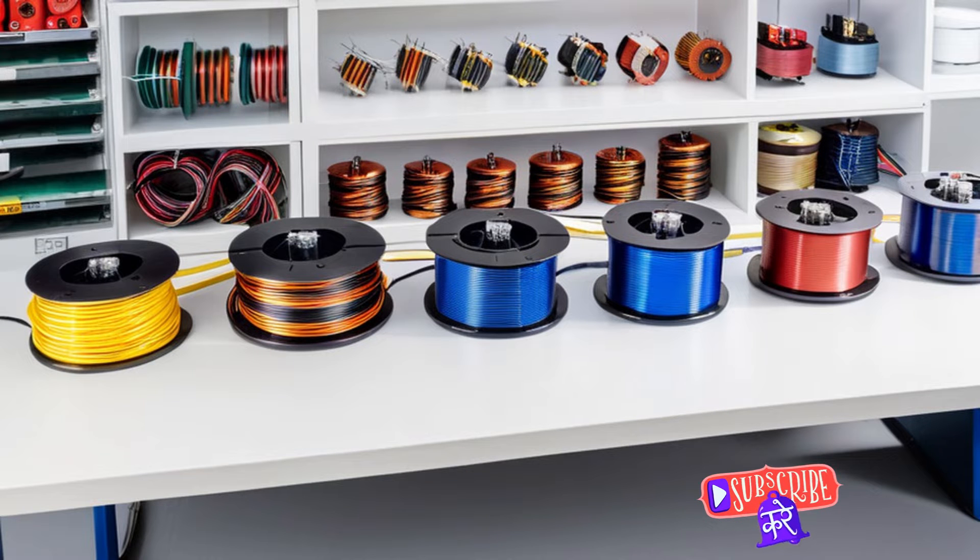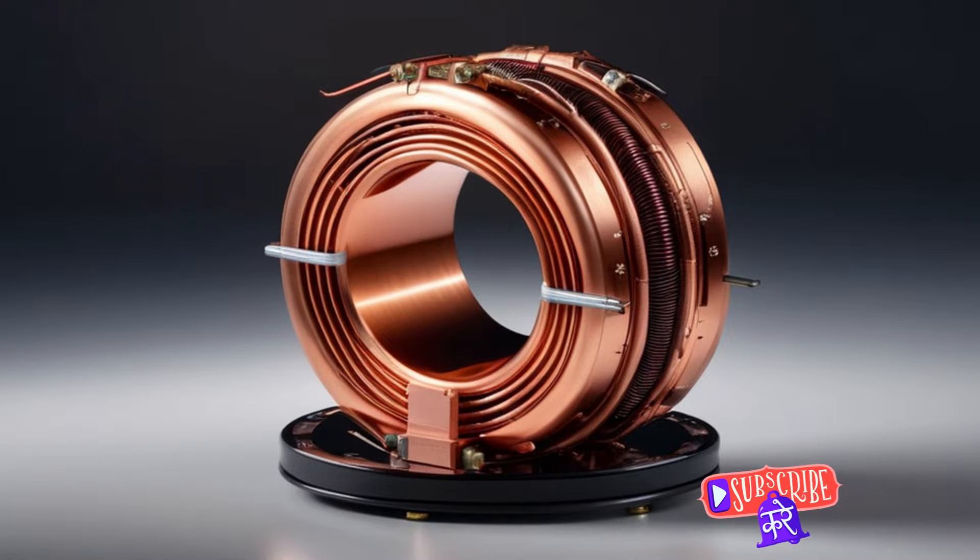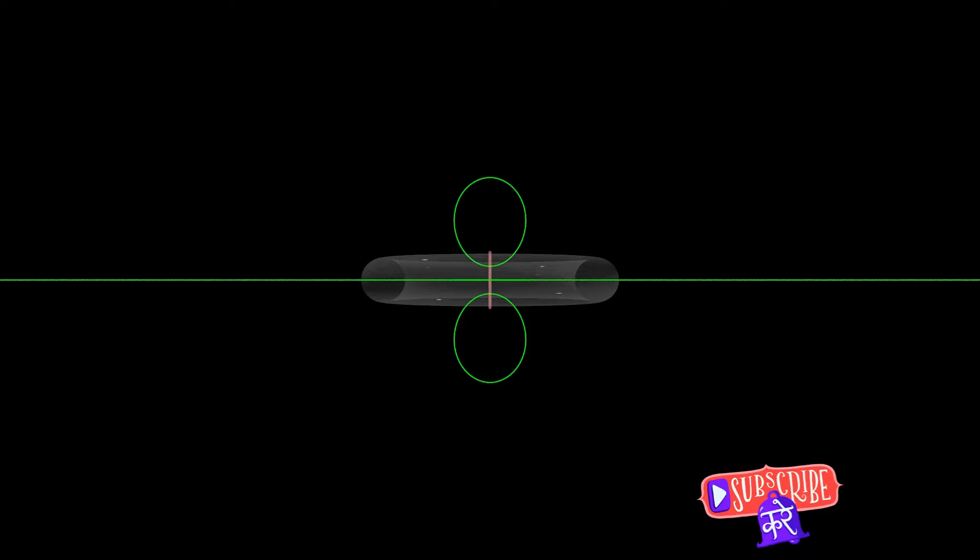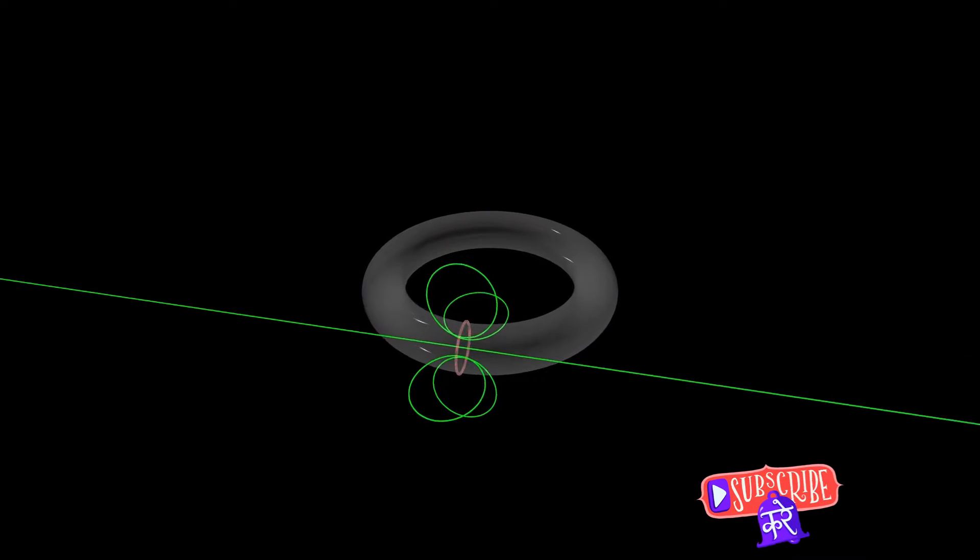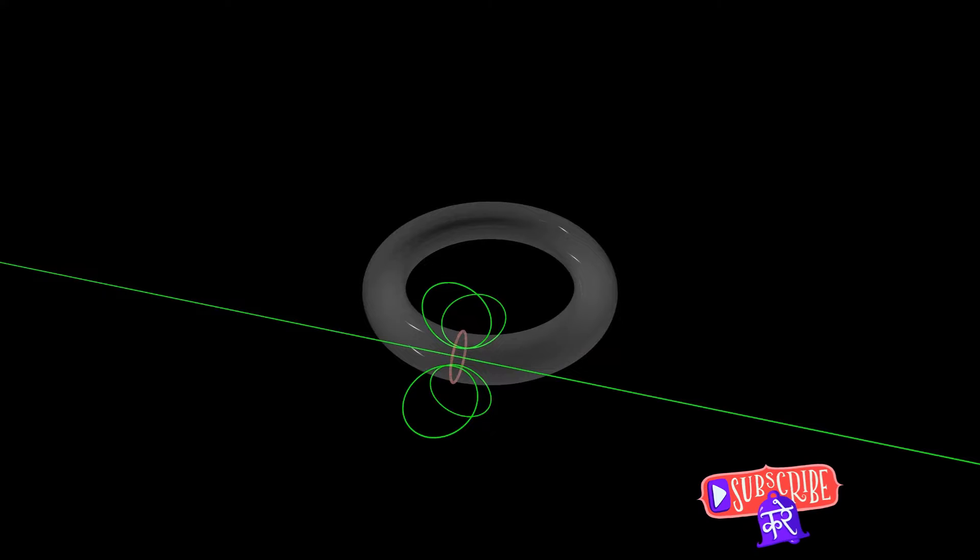But how exactly do these transformers work? What's going on inside that donut-shaped device that allows it to transform energy so efficiently? That's exactly what we're going to explore in this video. We'll take you through the workings of a toroidal transformer in a step-by-step manner.